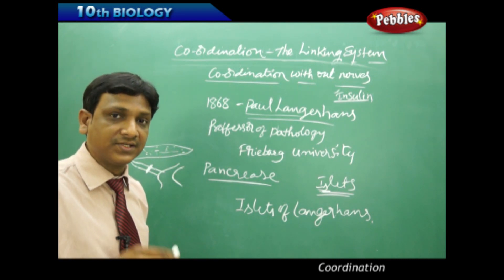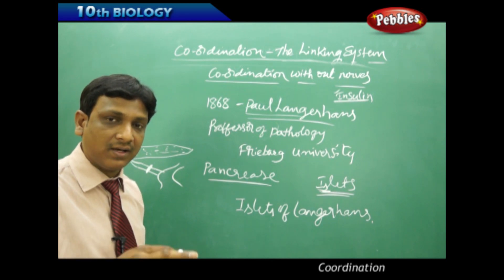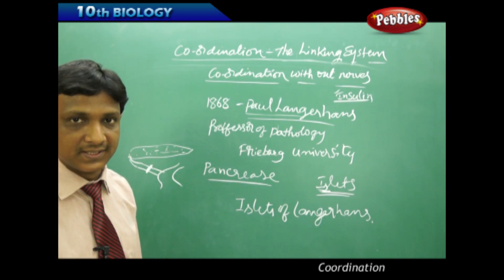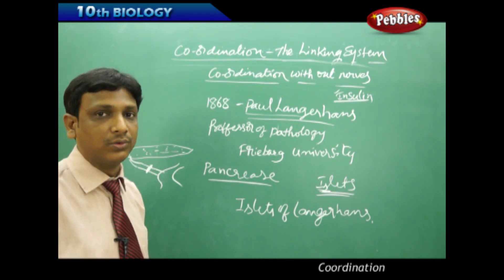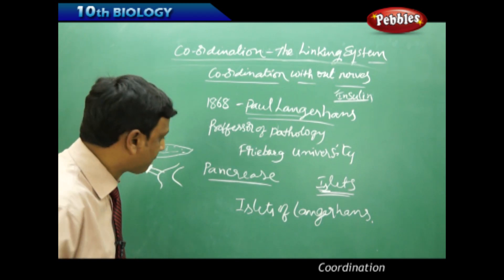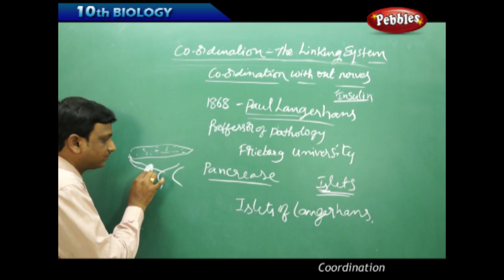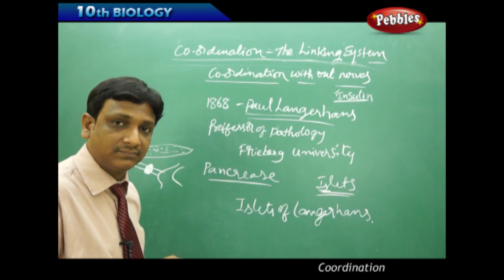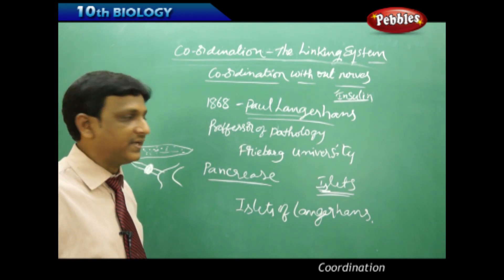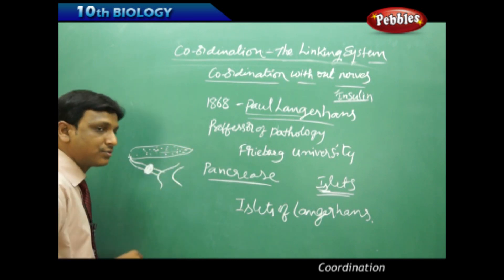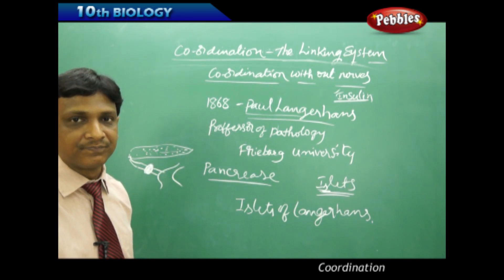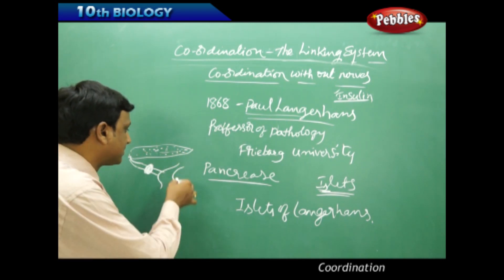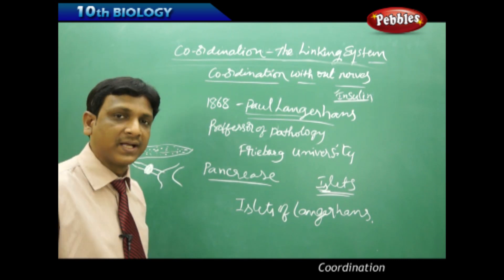From this they understood that the islet cells have no role in the digestion process — they have some other specific role. They also observed that even after tying the duct, the islets remained active and the experimental animal did not develop diabetes. This was direct proof that the islets are responsible for controlling blood sugar. The rest of the pancreas, excluding the islet cells, is responsible for digestion and producing pancreatic juice.